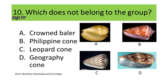These organisms fall either under family Volutidae or Conidae. If your answer is A, Crowned Baler, you are correct. Crowned Baler falls under family Volutidae, while the three cone snails fall under family Conidae.